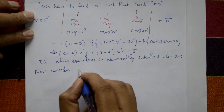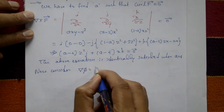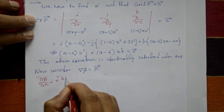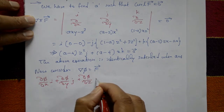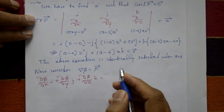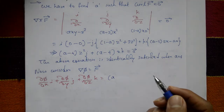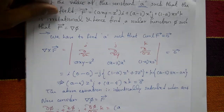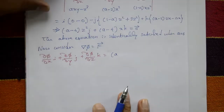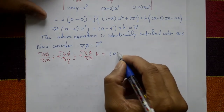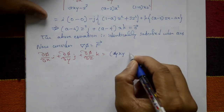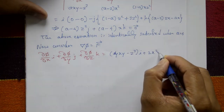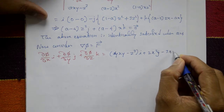Now consider del phi equals vector f. We have del phi/dx times i plus del phi/dy times j plus del phi/dz times k equals f. Substituting a equals 4, the vector field becomes f equals (4xy minus z cubed)i plus 2x squared j minus 3xz squared k.